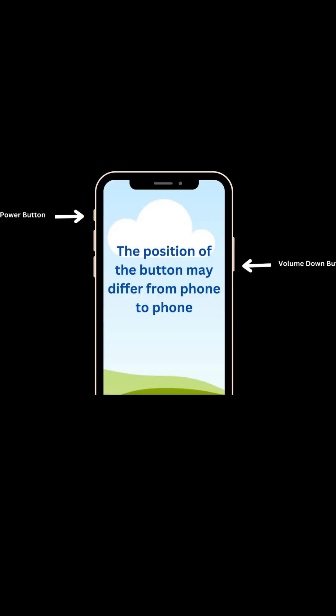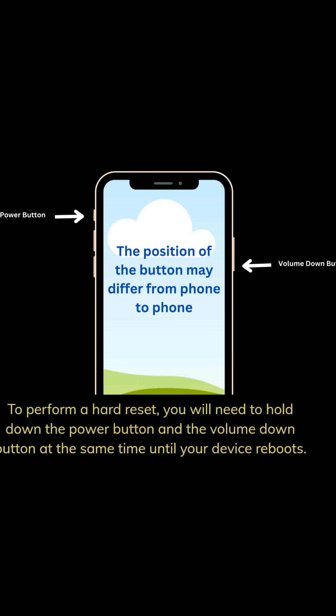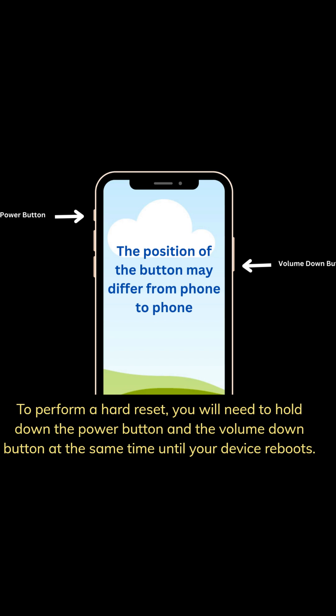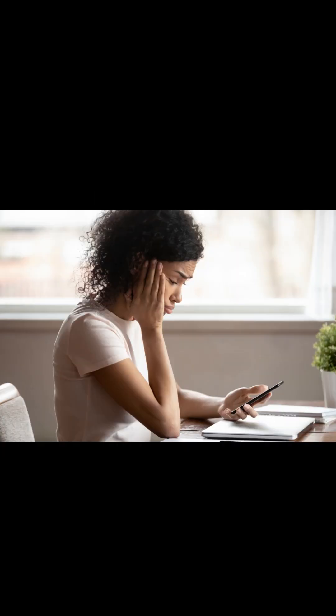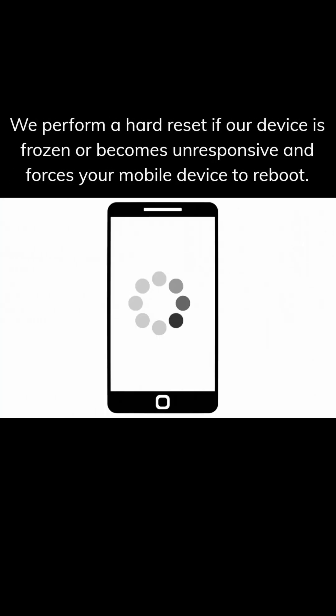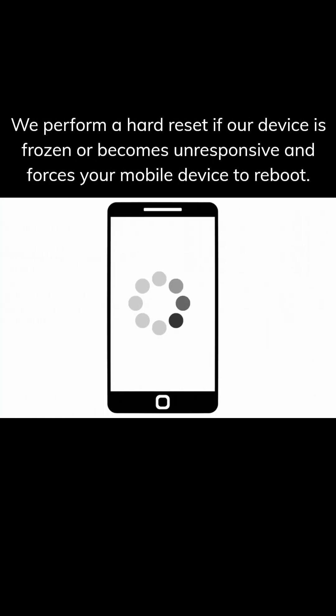Hard reset — also called a hardware reset — uses a specific button combination to reset. To perform a hard reset, you will need to hold down the power button and the volume down button at the same time until your device reboots. You can perform a hard reset if your device is frozen or becomes unresponsive, as it forces your mobile device to reboot.